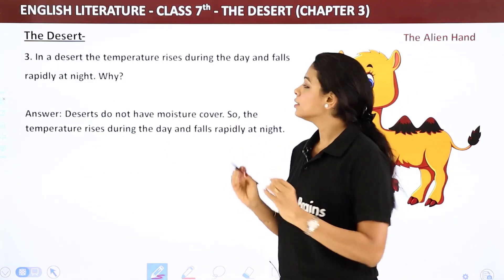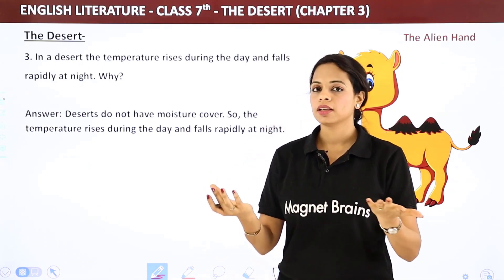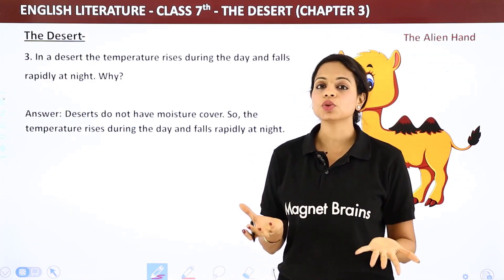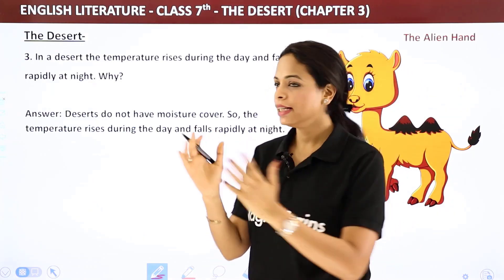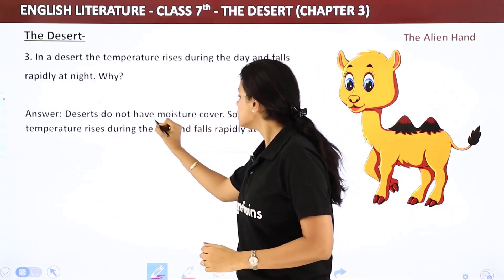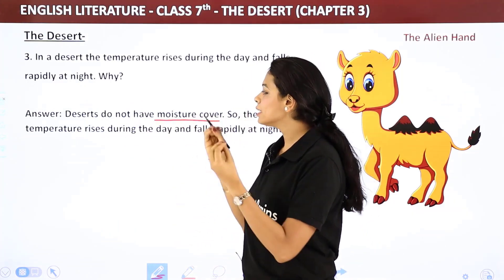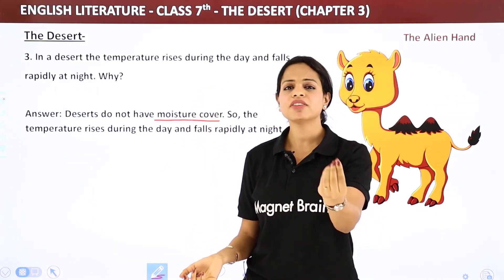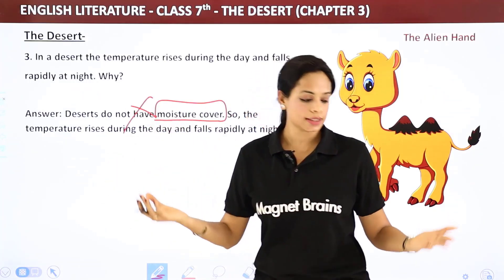Next question: in a desert, the temperature rises during the day and falls rapidly at night — why? Desert mein moisture cover ki bahut kami hoti hai. Deserts do not have a moisture cover — so the temperature rises during the day and falls rapidly at night. Ek hi word yaad karna hai — moisture cover nahi hota hai. That's it.